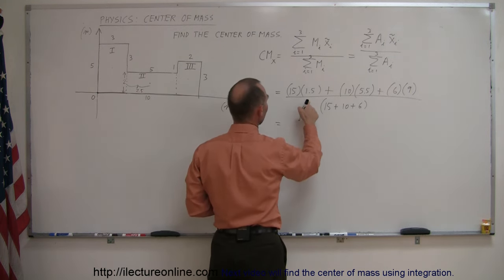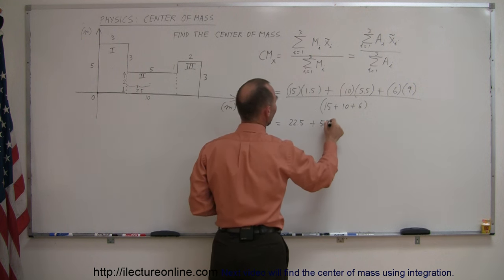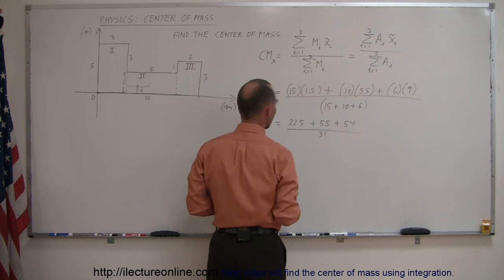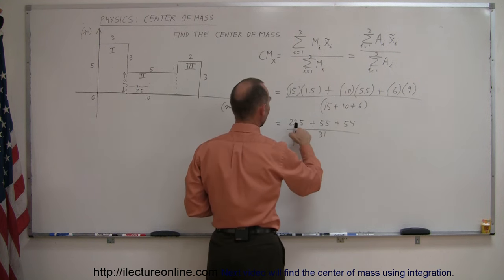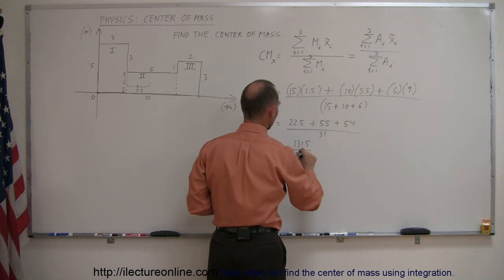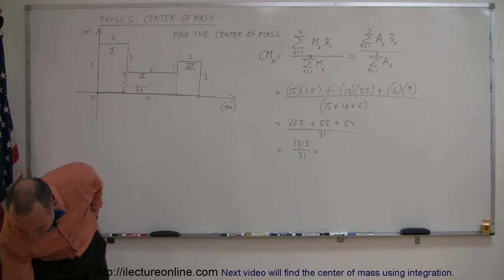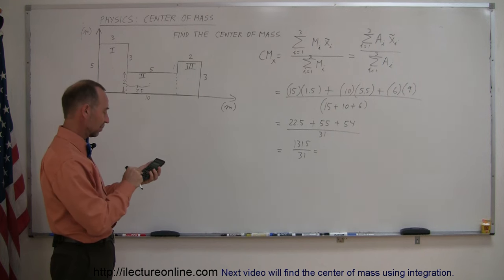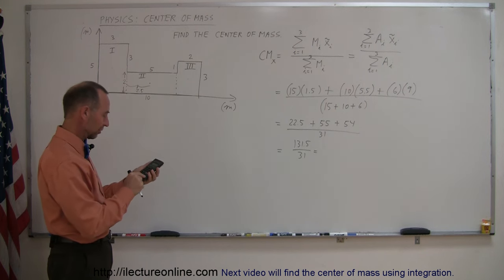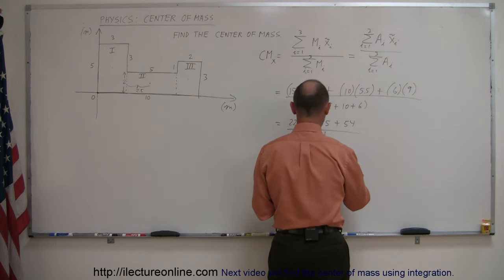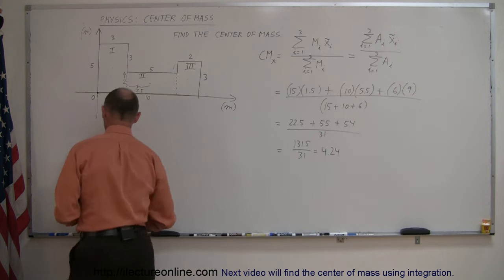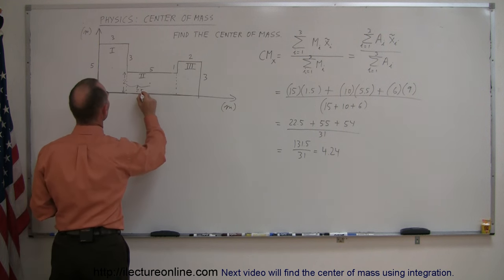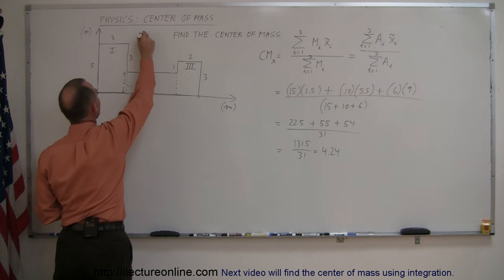So what is this equal to? 15 times 1.5 is 22.5, plus 55, plus 54, all divided by 15 plus 10 plus 6, which is 31. That gives us 131.5 divided by 31. Using my calculator: 131.5 divided by 31 equals 4.24 meters. That means from the origin to the right, a distance of 4.24 meters — so somewhere around 4.24 along this line I will find the center of mass.